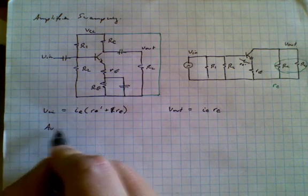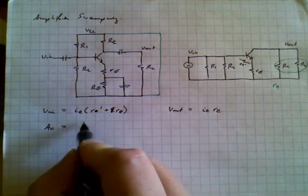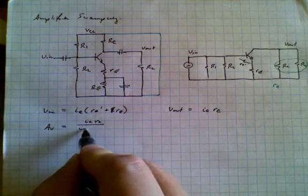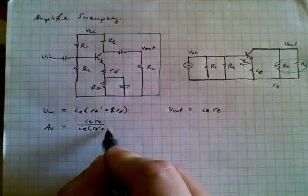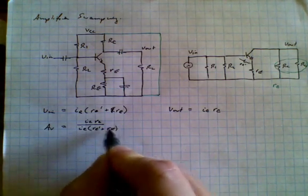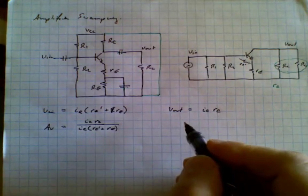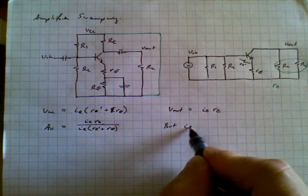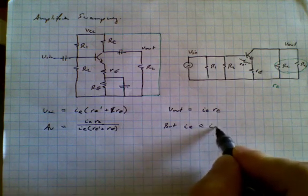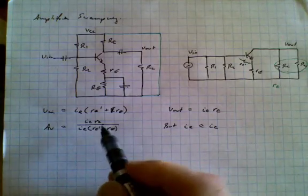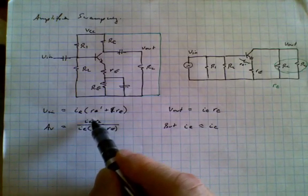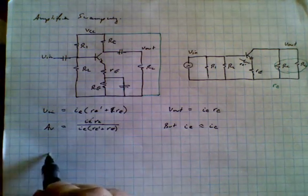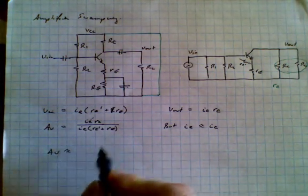So now we can actually write an equation for gain. The voltage gain is equal to the output IC RC divided by IE times Re prime plus little r big E. At this point we can notice that the emitter current is approximately equal to the collector current. And so these two terms here are very close. In fact, they're so close we can effectively cancel them out.